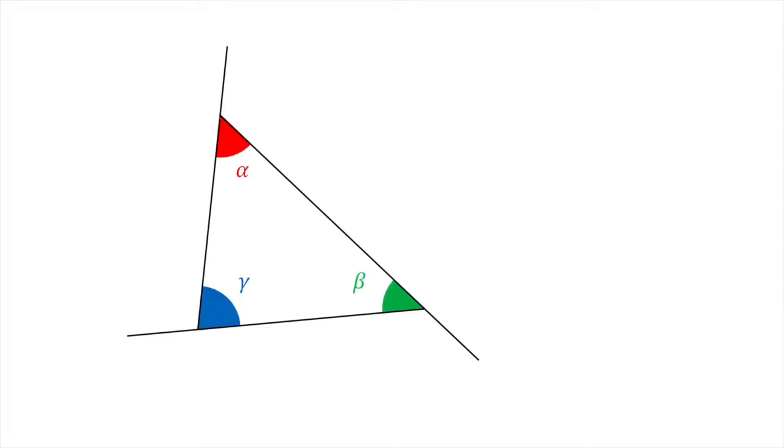We will now label the three external angles as delta equals 180 degrees minus alpha since alpha and delta are complementary. Epsilon equals 180 degrees minus beta since beta and epsilon are complementary. And zeta equals 180 degrees minus gamma since gamma and zeta are also complementary.